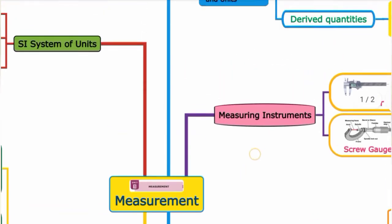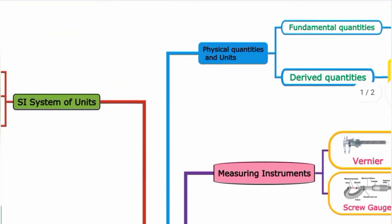Measurement. First, physical quantities and units. Physical quantities have two types: fundamental quantities and derived quantities.